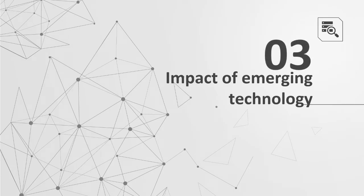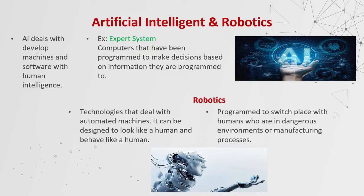The impact of emerging technology. Artificial intelligence and robotics. AI deals with developing machines and software with human intelligence. An example is expert systems — computers that have been programmed to make decisions based on information. Robotics deals with automated machines. They can be designed to look and behave like a human, and are also programmed to replace humans in dangerous environments or manufacturing processes.